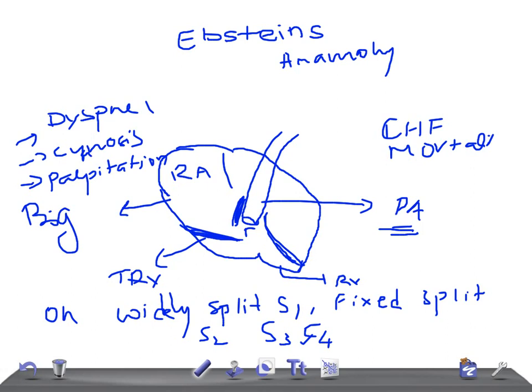And there can be a holosystolic murmur at left lower sternal border, left lower sternal border, and there can be an opening snap too.